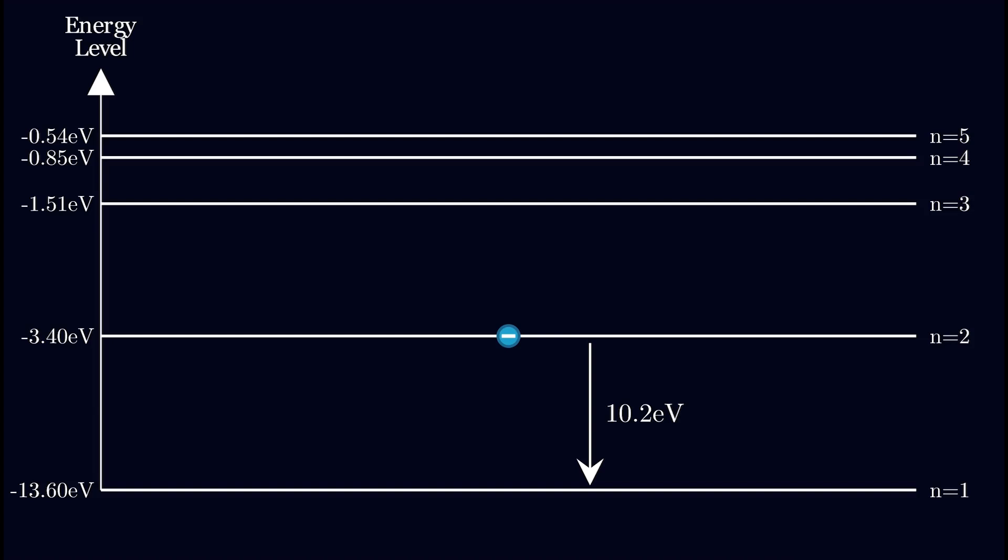As it falls it will lose 10.2 electron volts of potential energy. This potential energy will be transferred to energy in the form of light so the electron will release a photon with the exact energy it loses, an ultraviolet photon of wavelength 122 nanometers. But this isn't the full picture.